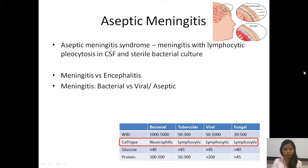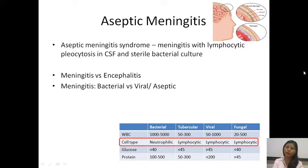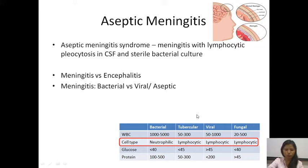There are a few terms you should all be aware of: meningitis and encephalitis. Meningitis is inflammation of the meninges, which is the outer covering of the brain, and encephalitis is inflammation of the brain parenchyma. Meningitis is primarily divided based on etiological agent — it could be bacterial, tubercular, viral, or fungal.